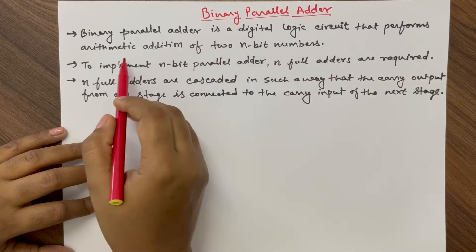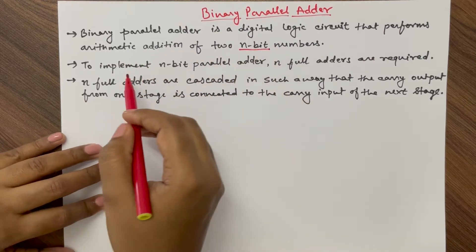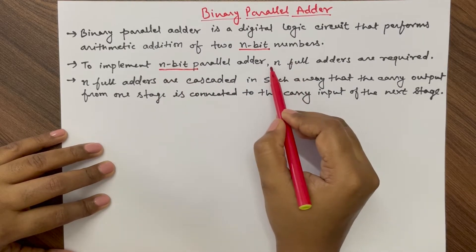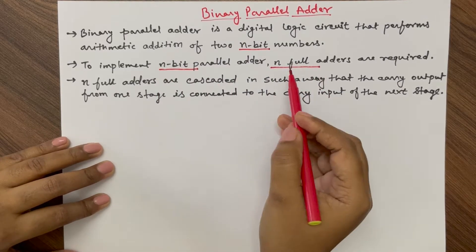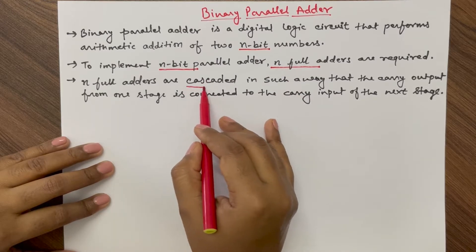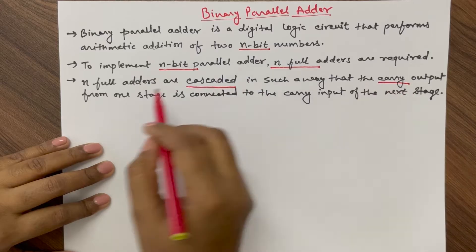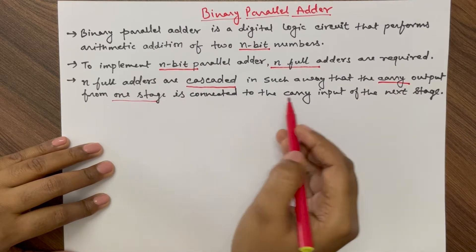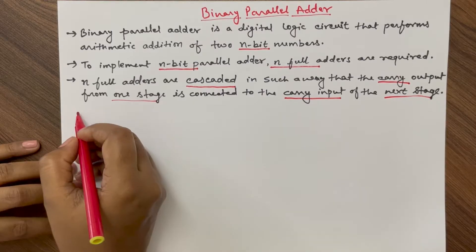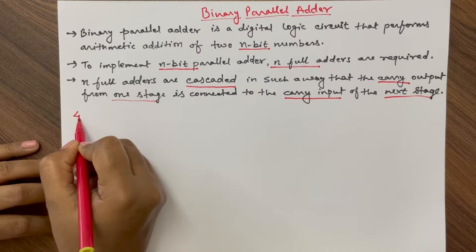A binary parallel adder performs arithmetic addition of two n-bit numbers. To implement an n-bit parallel adder we require n full adders, and these full adders need to be cascaded in such a way that the carry output from one stage is connected to the carry input of the next stage. Now let us design a four-bit parallel adder.